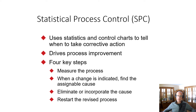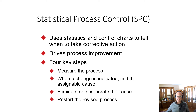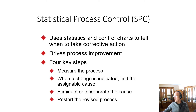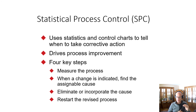Statistical process control uses statistics and control charts to tell when to take corrective action or at least investigate, and it drives process improvement. It has four key steps: measure the process and sample it; when a change is indicated, find the assignable cause; if you find something outside the control limits or a negative trend, find out what's causing it and correct it; eliminate or incorporate the cause — if it's something good, build it in, reestablish your limits, restart the revised process, and continue to track. So statistical process control can measure and evaluate both improvements and negative occurrences.